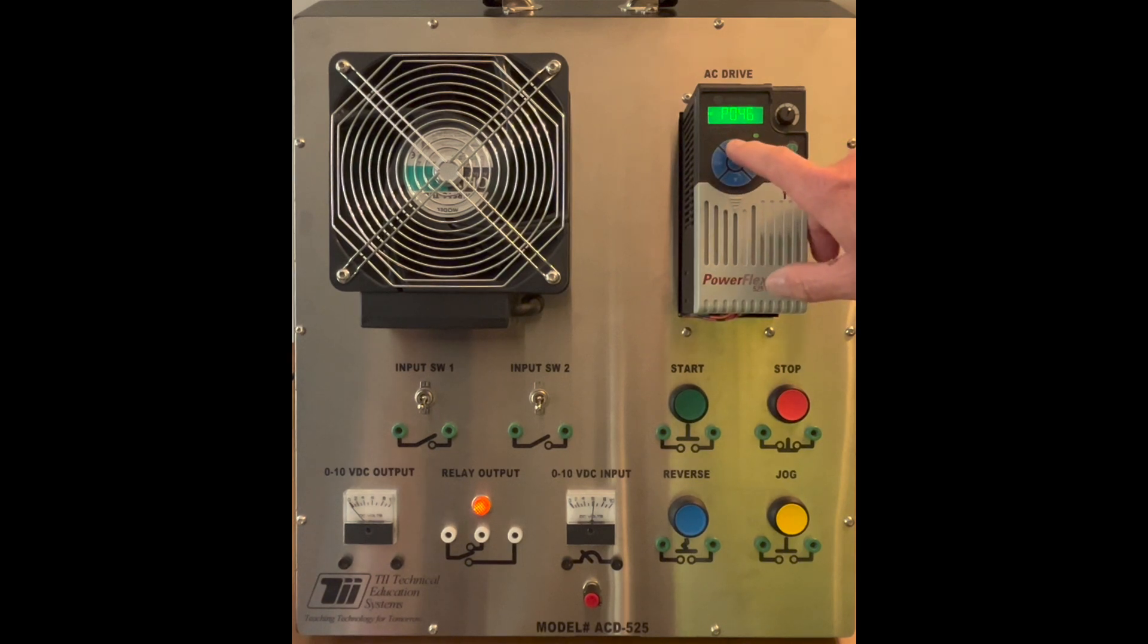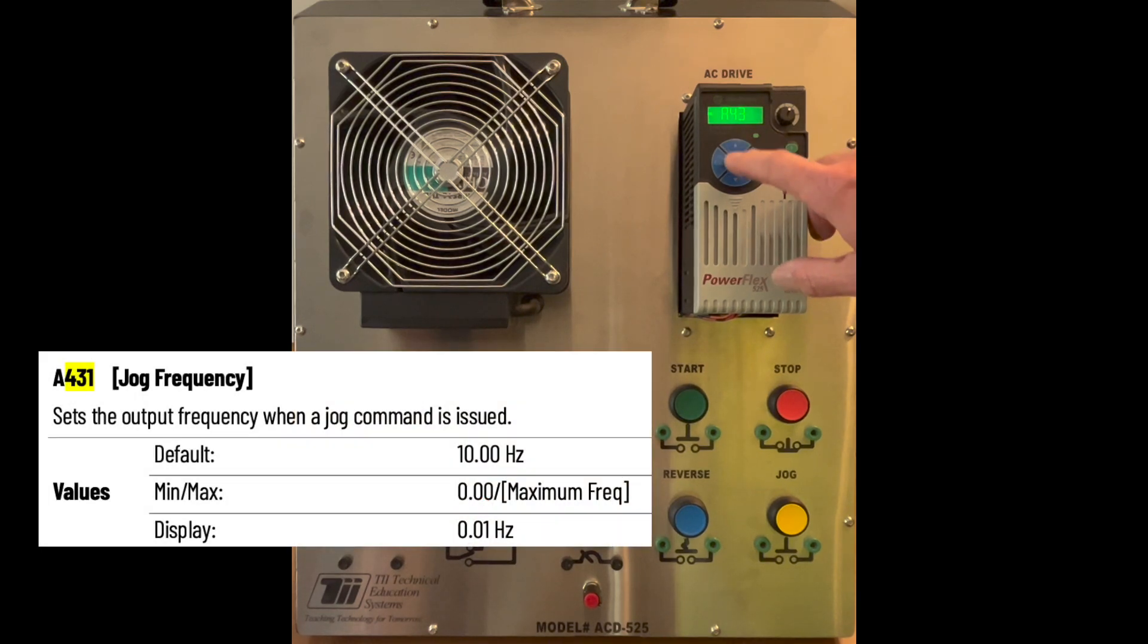Then we're going to scroll up to A, then we'll enter into here and then we're going to go up to A431. So A431 is where that is activated.